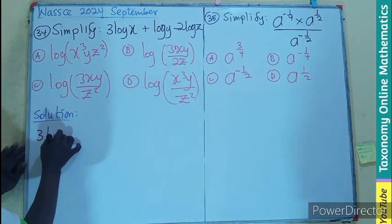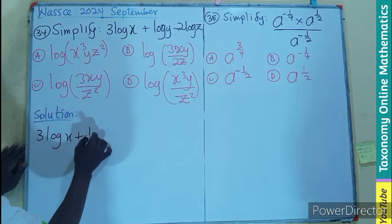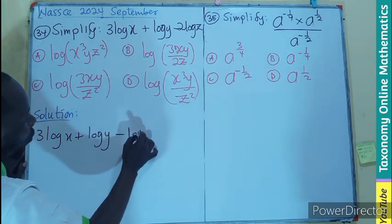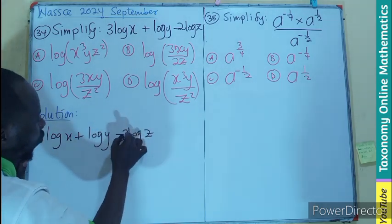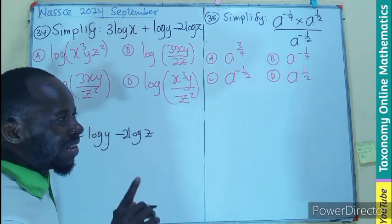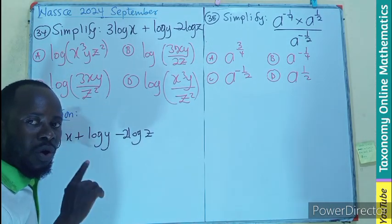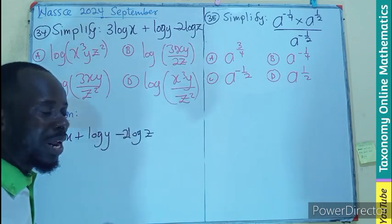That is 3 log x plus log y minus 2 log z. We are going to first apply the third law, which is that a number multiplying the logarithm becomes the exponent of the argument.